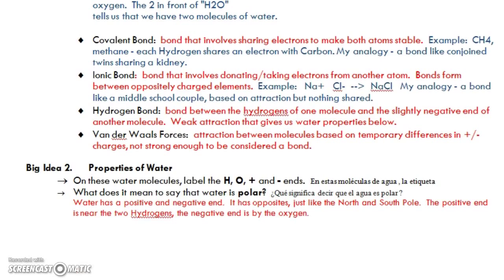Let's talk about bonds. Covalent bonds is where you share electrons. It makes both of the atoms happy and stable. So remember in class I talked about this bond is like being conjoined with a twin and sharing some major organ like a liver or a kidney. You're connected because you're sharing something that you both need.